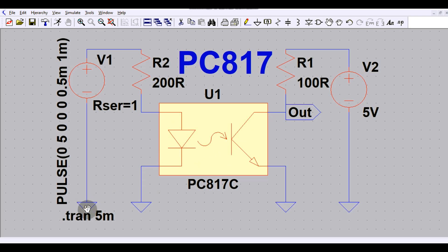But in the actual application you have two separate grounds. One ground is for this side, the diode side, and one ground is for your transistor side. So make sure while you are designing your circuit by using PC817 you need to have two separate grounds to give the basic isolation between this area to this area.